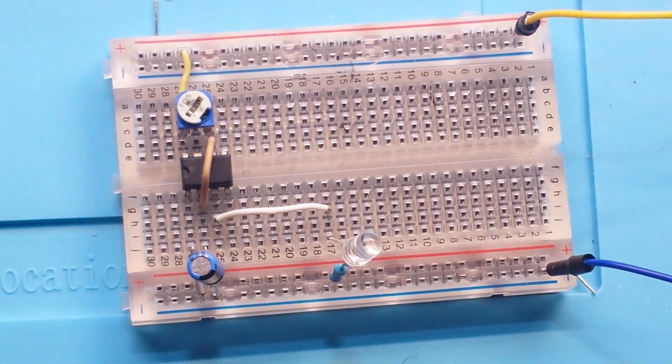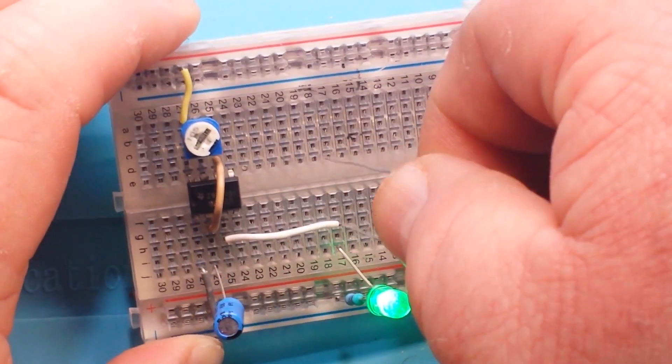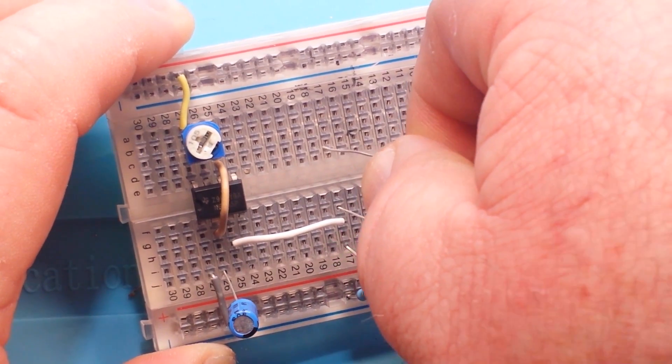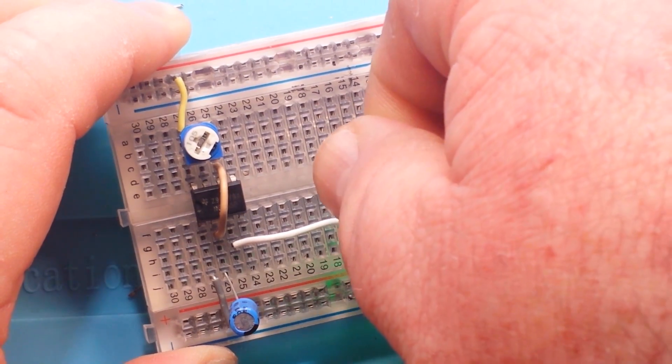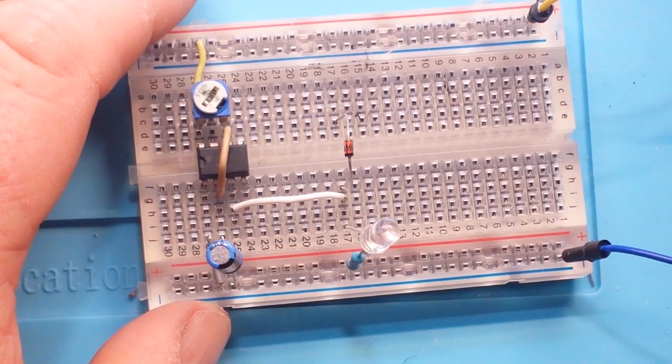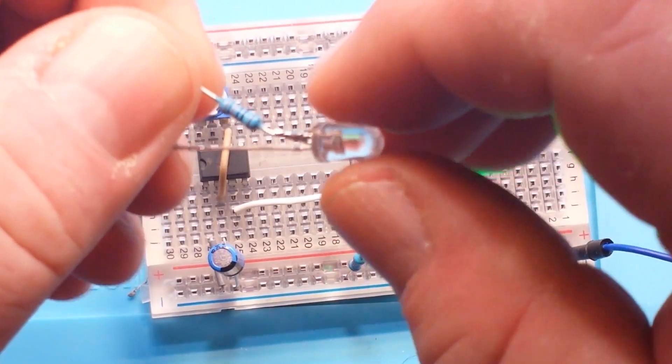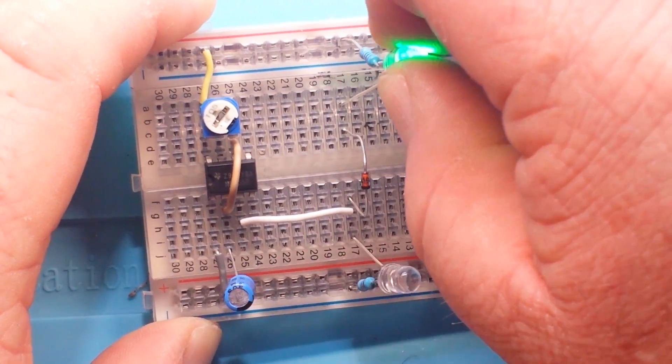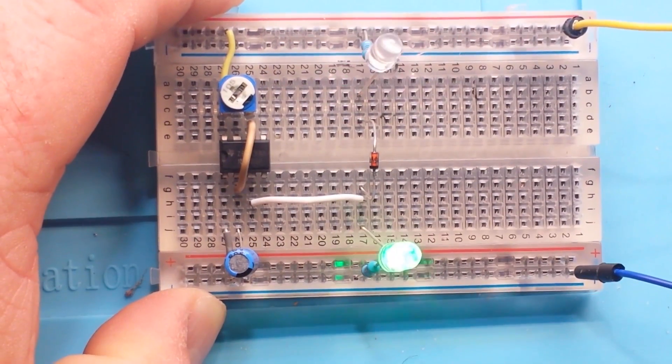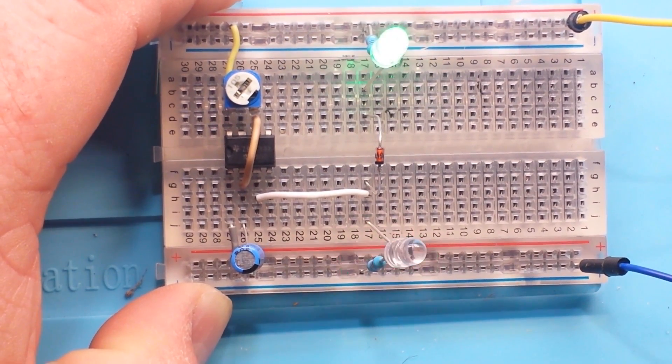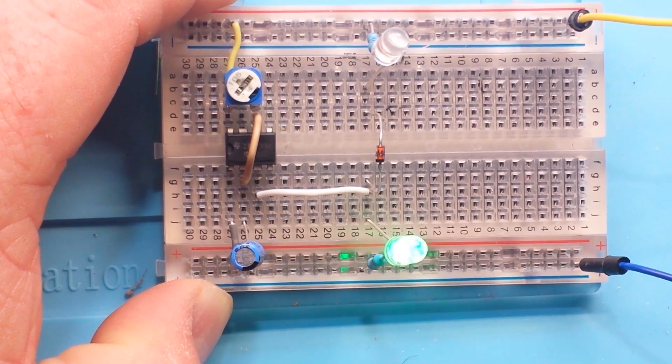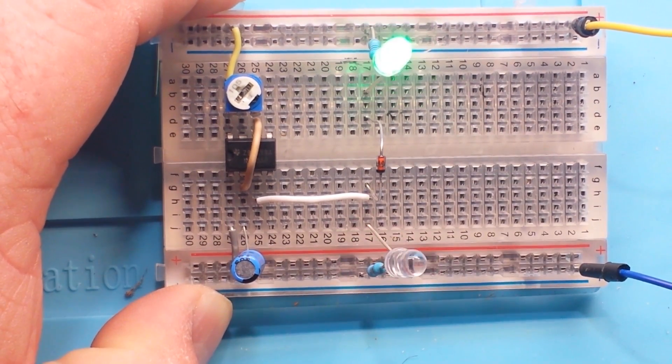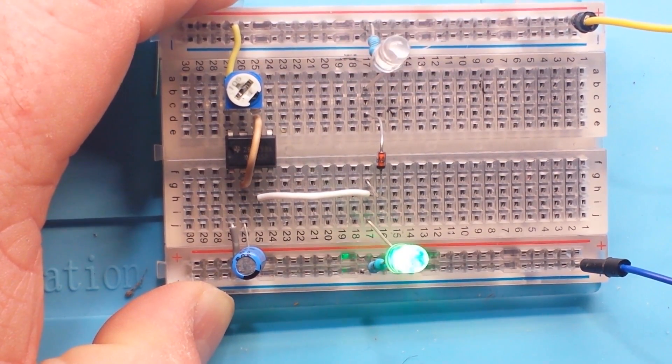But what if we take a diode and stick it there, and another LED and stick it here? Well, what we've got now is just a dual-blinking LED. Basically, this is what we call a 555 hysteretic oscillator.